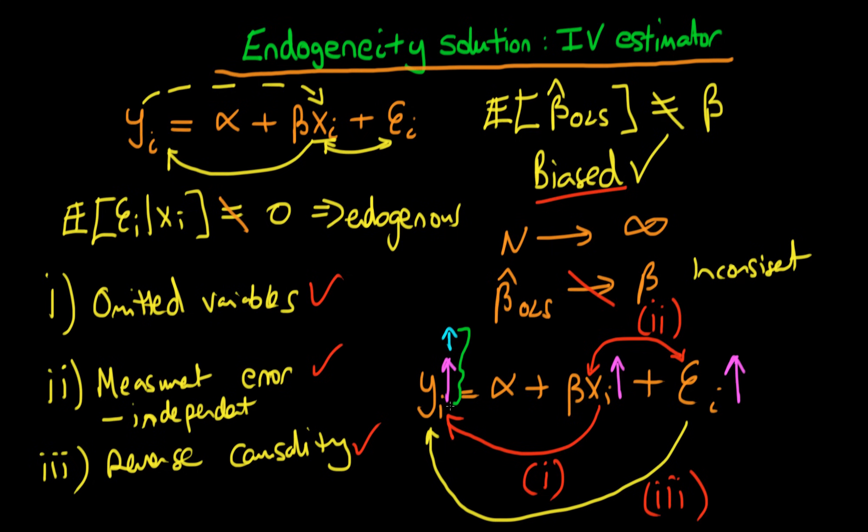Of which only one of them we are interested in, and the problem with endogeneity is that we're not able to just change our independent variable without changing some of these omitted factors, or without causing some sort of change in the error term. Which means there's going to be another channel which causes changes in y.